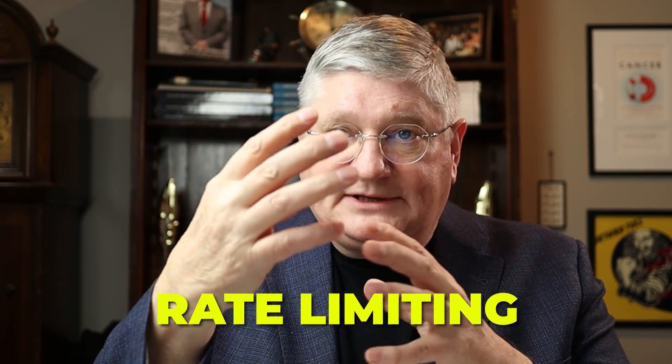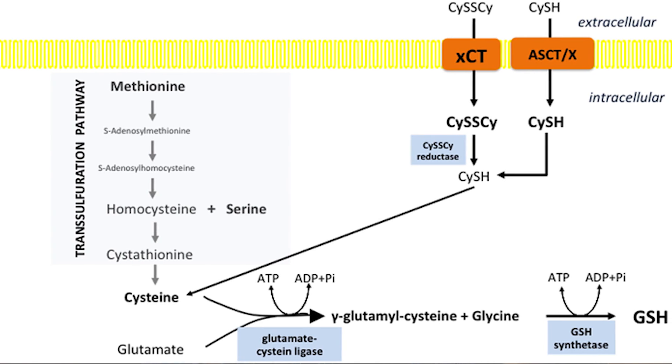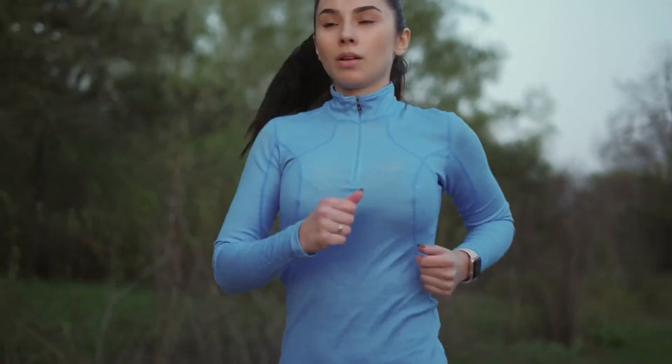Cysteine is the rate-limiting amino acid for the formation of glutathione, a primary antioxidant in the body. By rate-limiting, that means if I run out of the other amino acids that make up glutathione, production doesn't slow down as much. But if I run out of cysteine, production pretty much stops. So N-acetylcysteine is often used to help with the formation of glutathione.